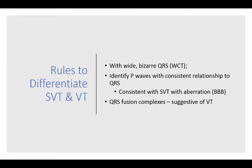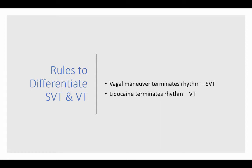Some rules to differentiate wide complex tachycardia: if you see P waves with a consistent relationship to the QRS, that is consistent with SVT with bundle branch block — also called aberration. If you see QRS fusion complexes, that is consistent with ventricular tachycardia. If a vagal maneuver terminates the rhythm, it is more likely supraventricular tachycardia. If lidocaine terminates the rhythm, it is more likely ventricular tachycardia.